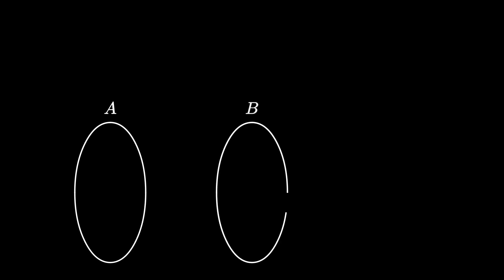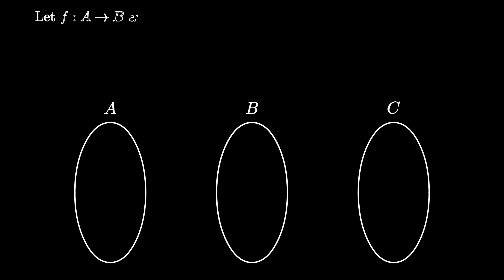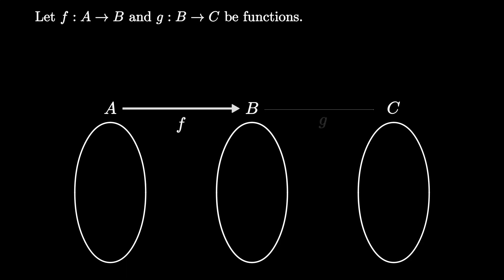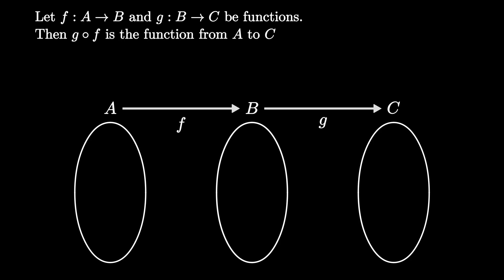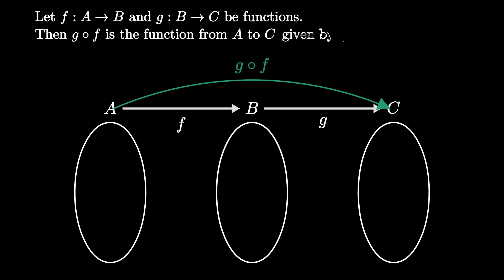Let a, b, and c all be sets. And suppose that f is a function from a to b, and g is a function from b to c. Then the function g composed f is the function from a to c, defined by the rule that g composed f of a is equal to g of f of a.